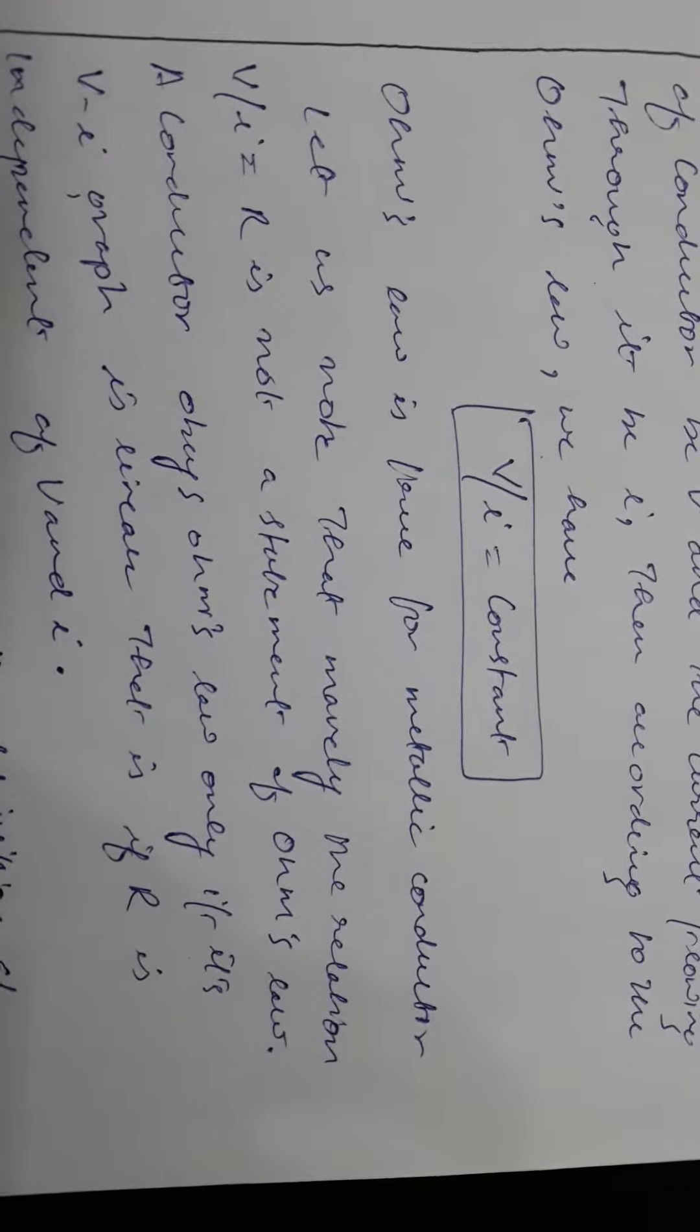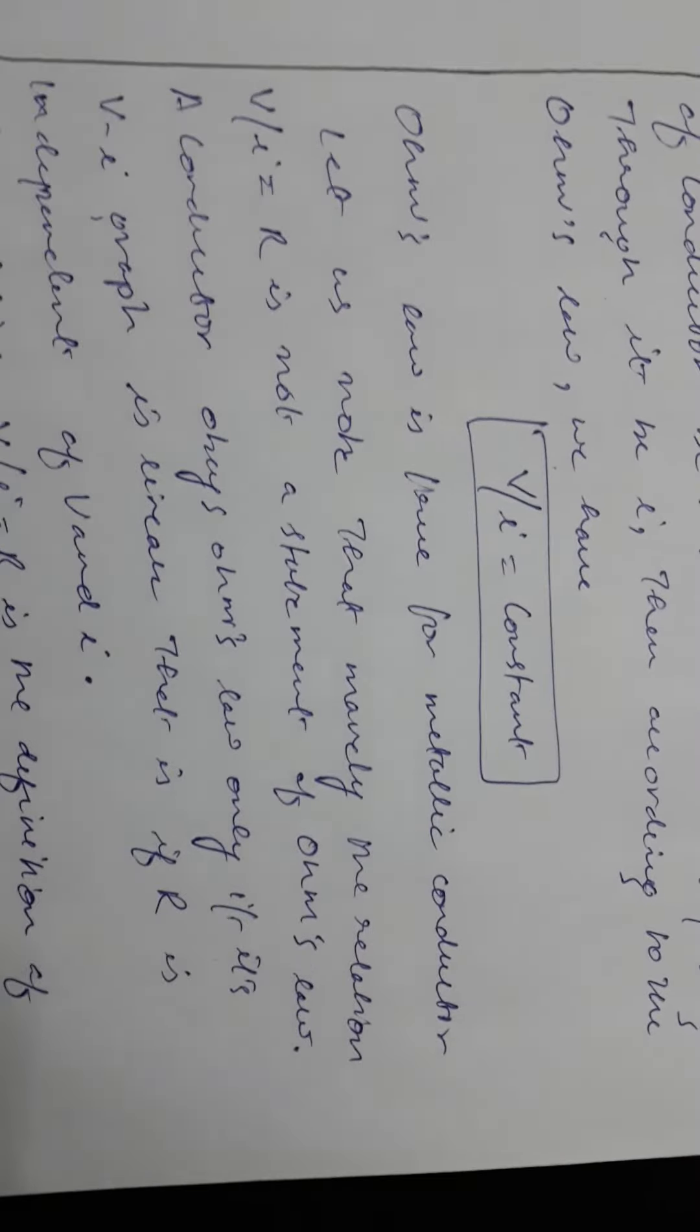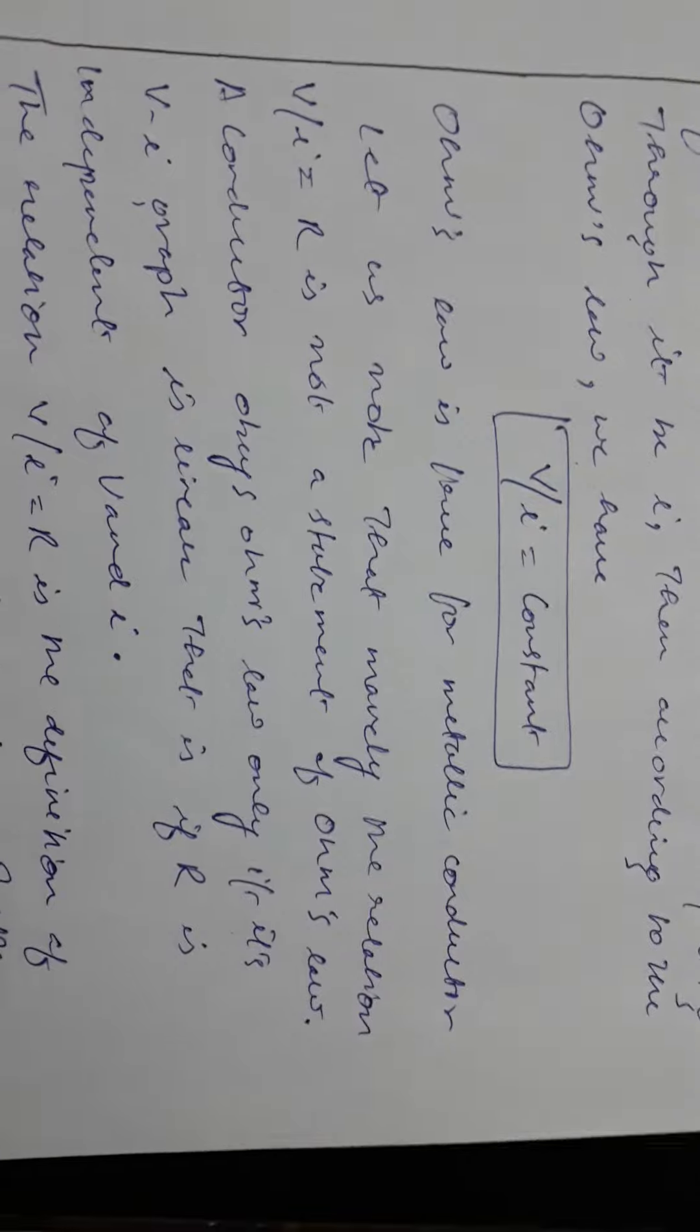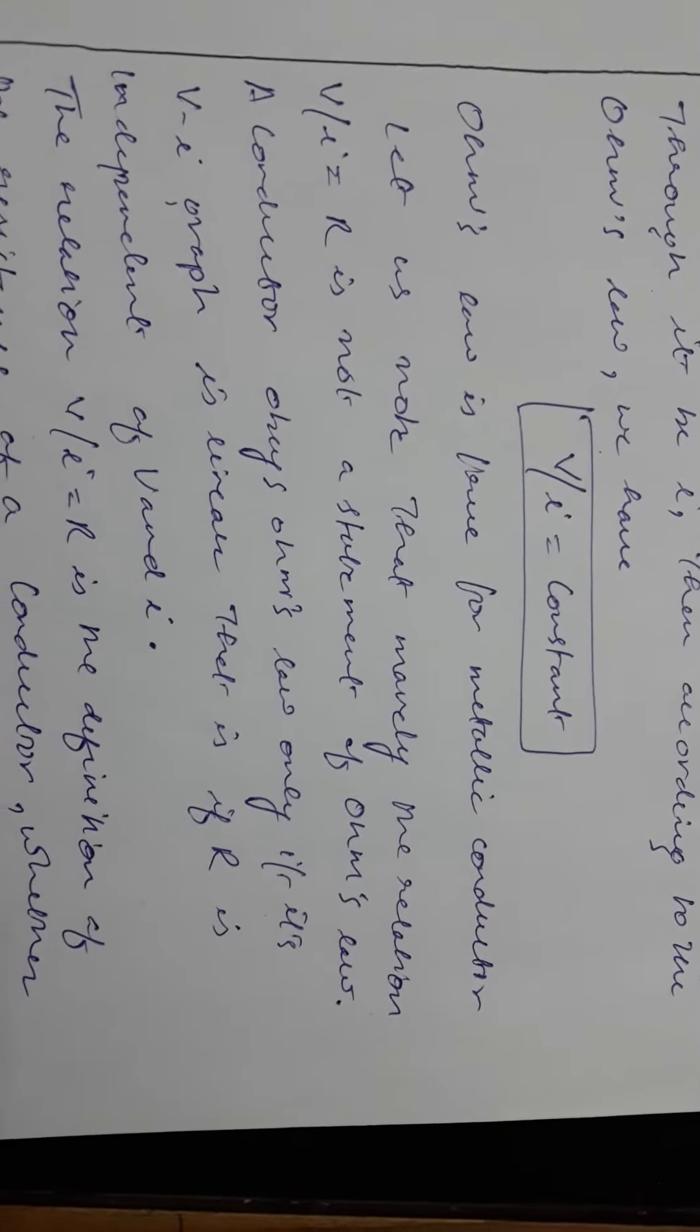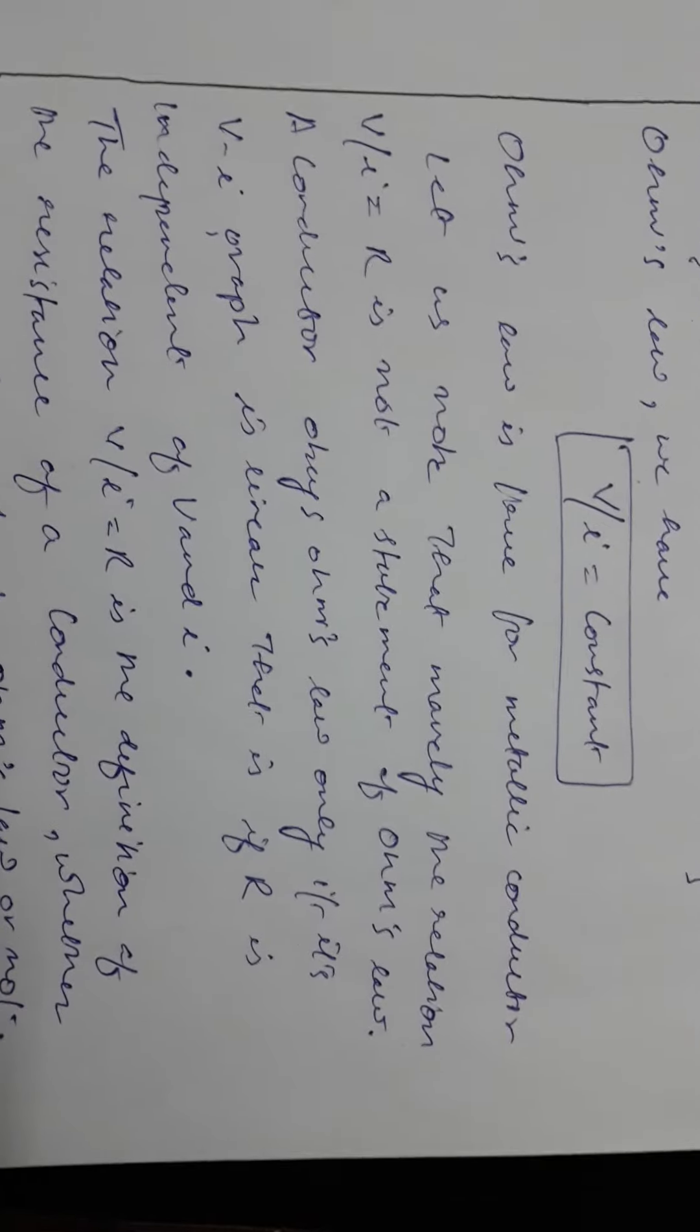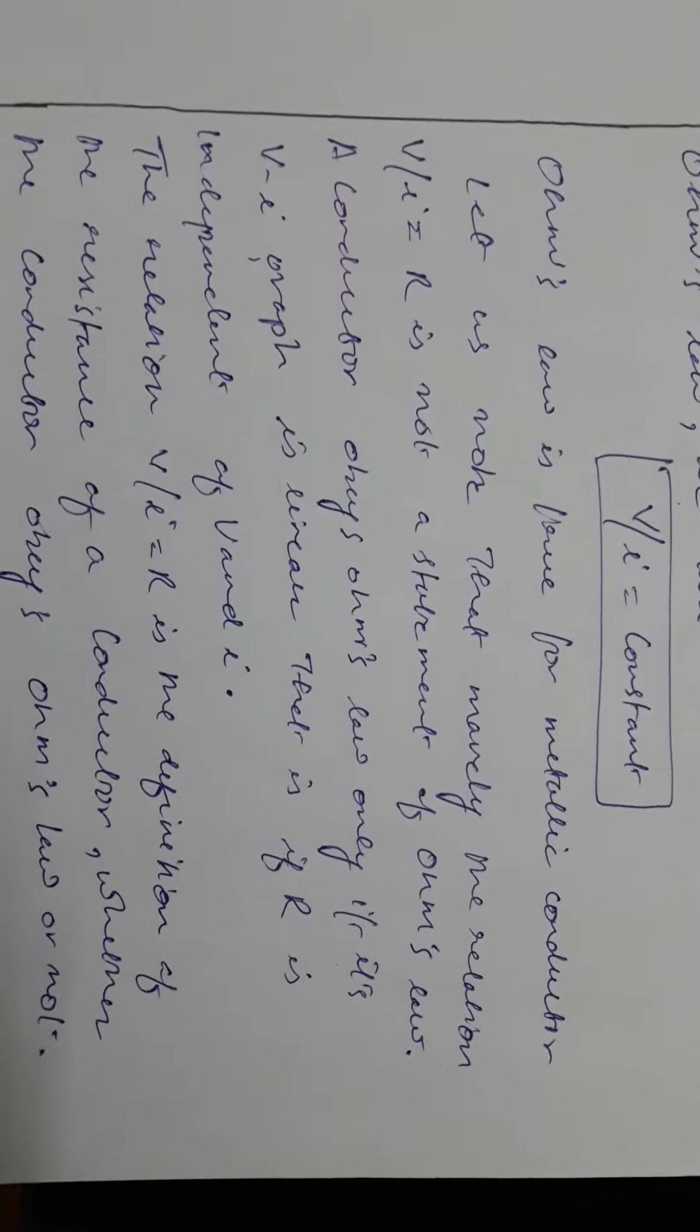Ohm's law is true for metallic conductors. Let us note that the relation V by I equals R is not a statement of Ohm's law. A conductor obeys Ohm's law only if its volt-ampere graph is linear.